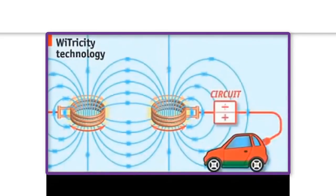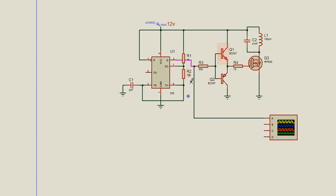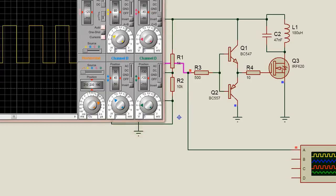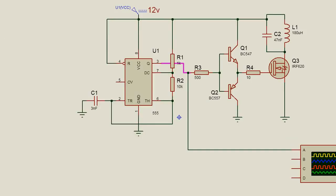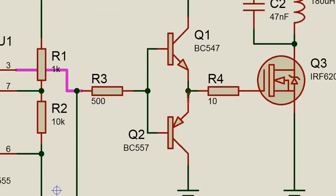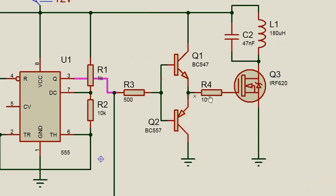The heart of this circuit is a 555 timer, arranged in an astable multivibrator mode, designed to produce a higher frequency of 20 kHz. The output of the 555 timer at pin 3 is connected to the base of two general purpose transistors T1 and T2, which are used to drive the MOSFET. The MOSFET is used to switch the LC-tuned circuit, which further transmits oscillating magnetic fields.